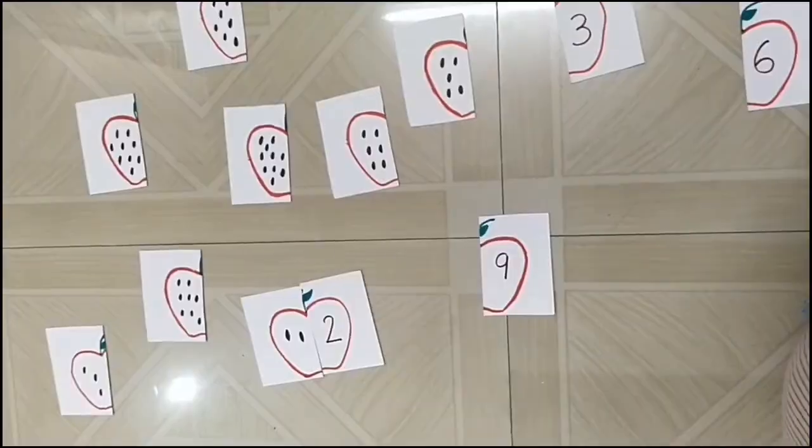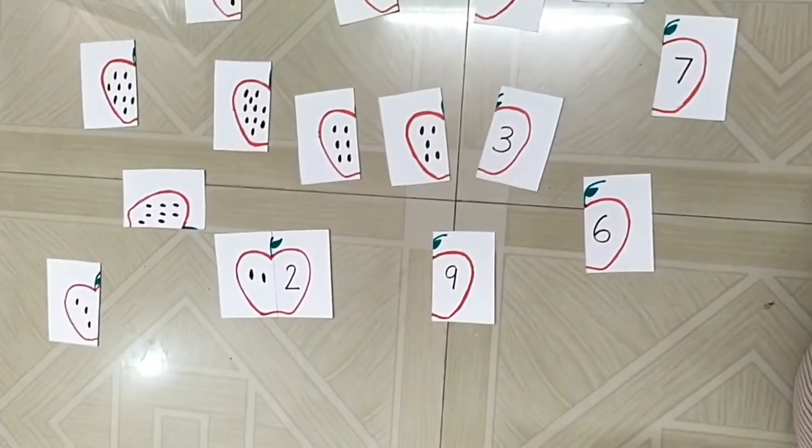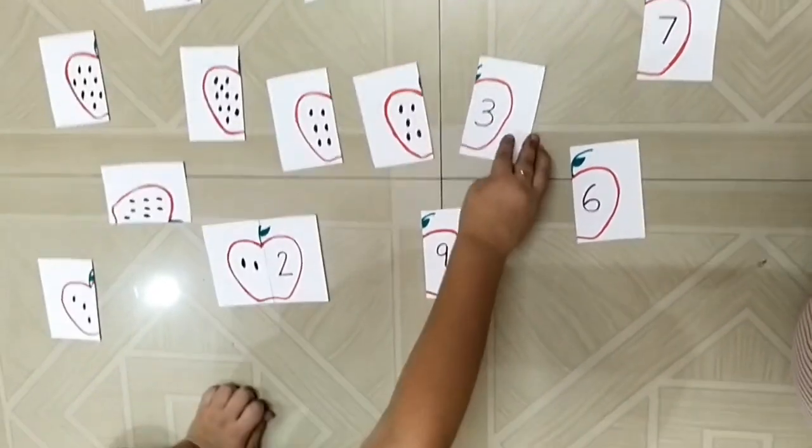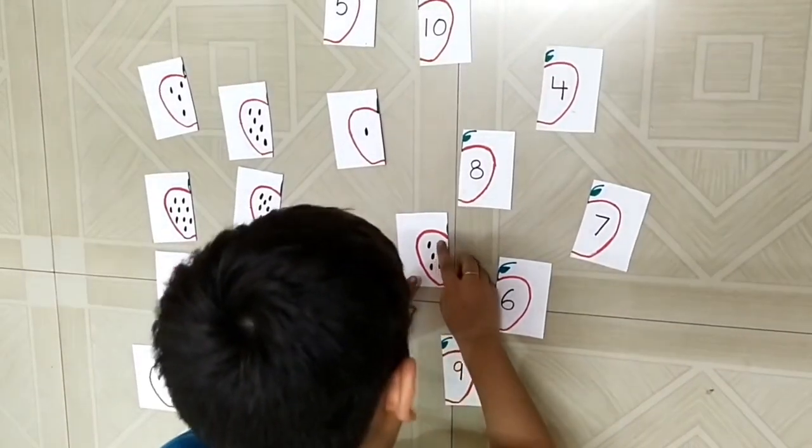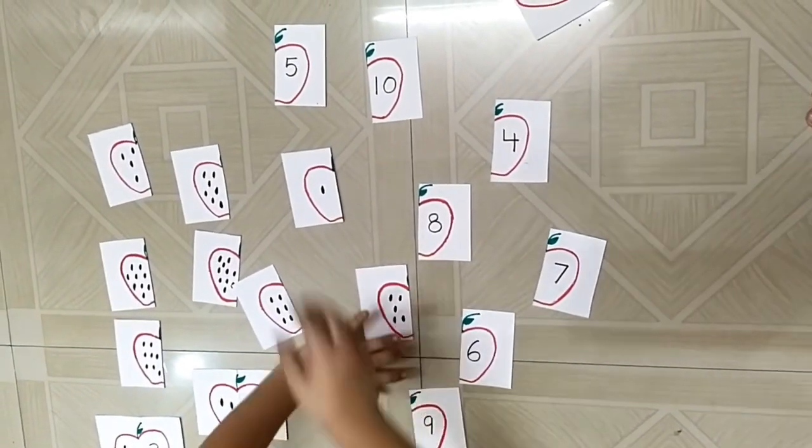Good. Now let's look at the other apples. One, two, three. Where is three? I found it. One, two, three, four, five. Where is number five? Found it.